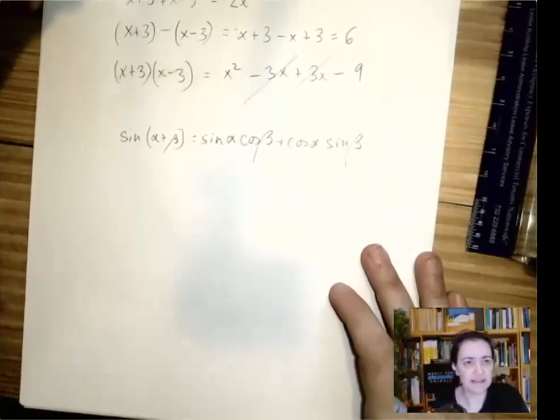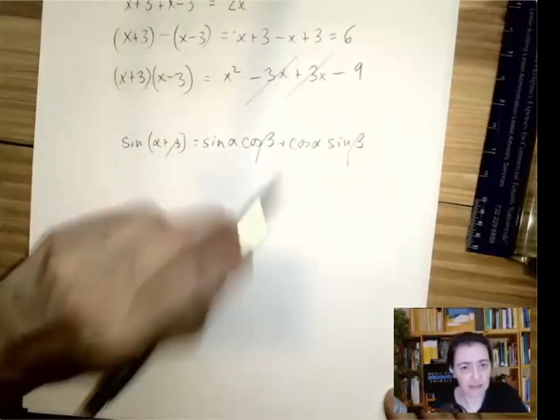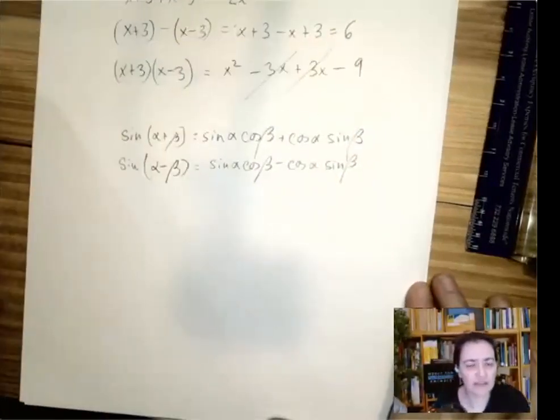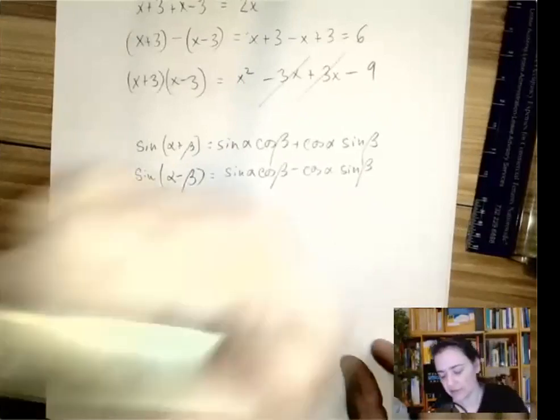The sum formula for sine is sine alpha cosine beta plus cosine alpha sine beta. And the difference formula for sine is the same thing, with a negative sign here. So they're conjugates, which means that there is going to be lovely cancellation whenever we add these or subtract or multiply. And that's a good thing to keep in mind.